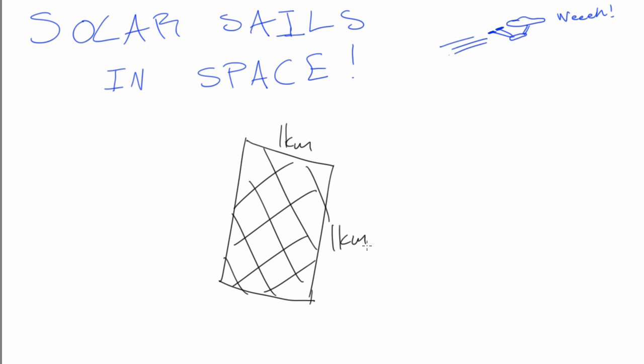In the previous video, we derived two equations for the radiation pressure depending on if everything was absorbed or everything was reflected. As I said, this is a reflective solar sail, so our pressure is equal to two times the Poynting vector divided by c.